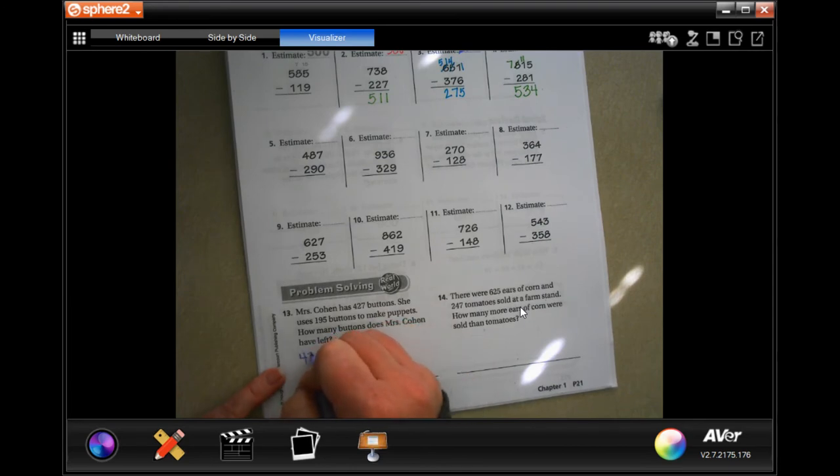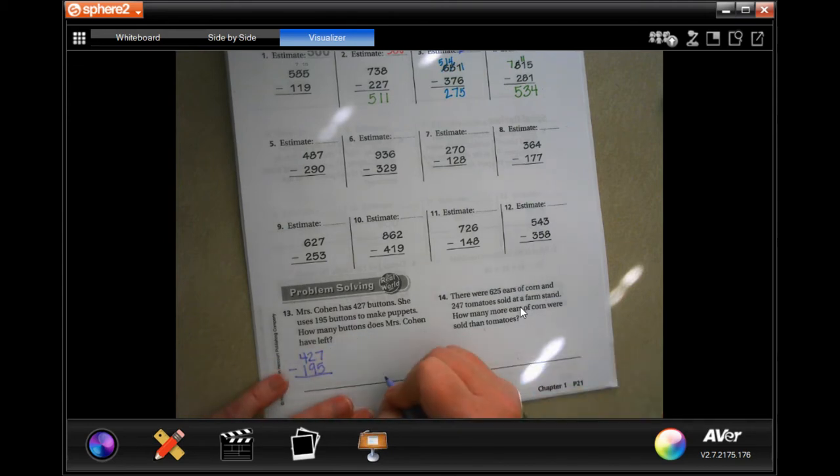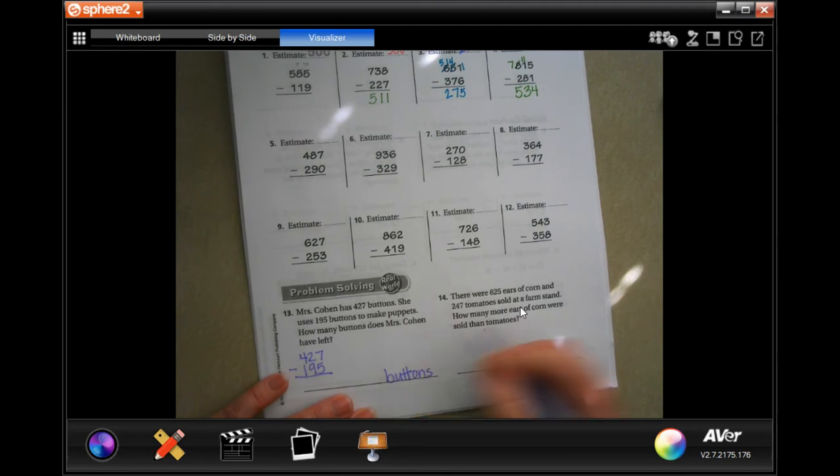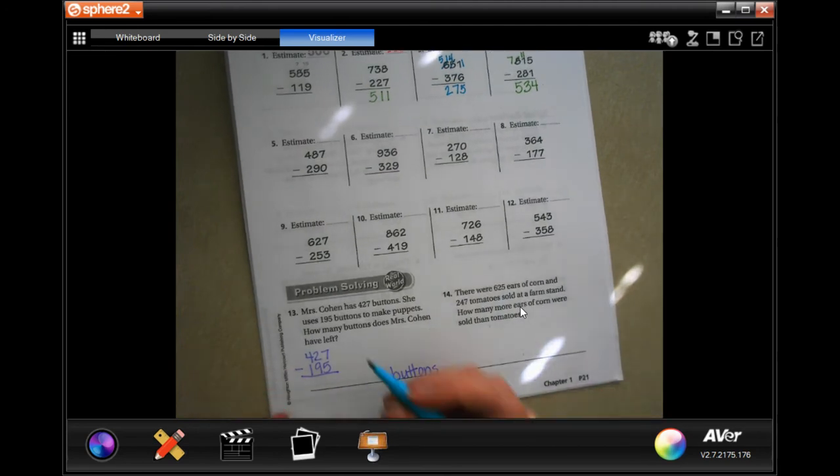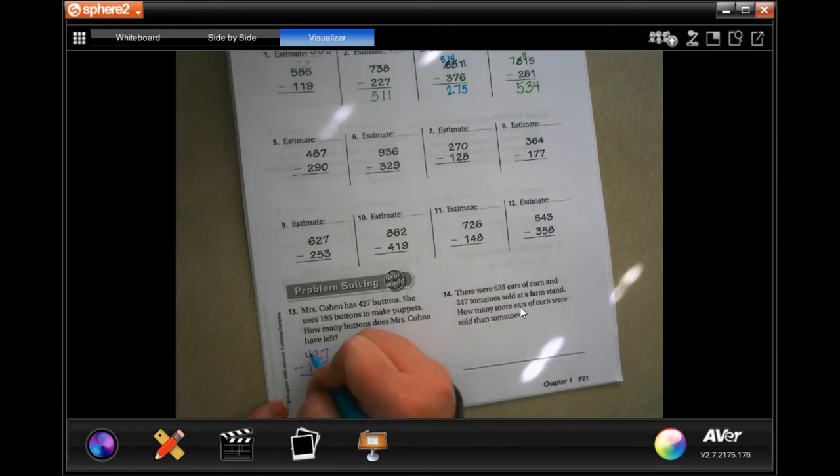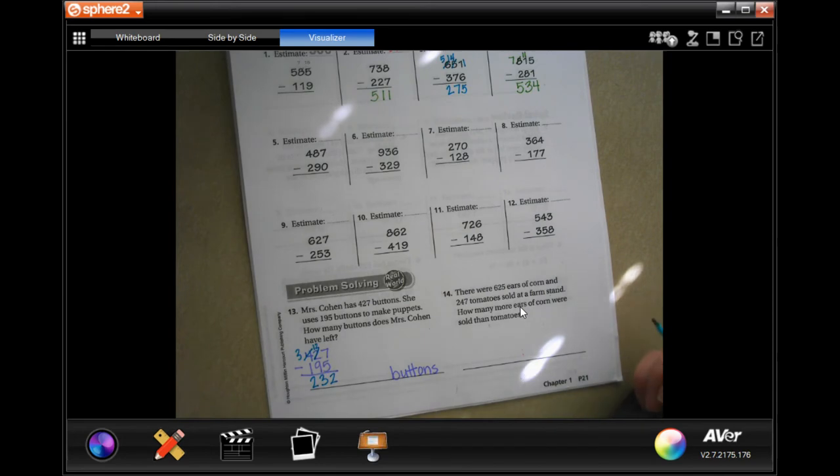So, 427 minus 195. And whatever it is, it's going to be in buttons. We want to make sure we use our label. 7 minus 5 is 2. 2 cannot take away 9. We are going to borrow 1. Now we have 12 minus 9. 12 minus 9 is 3. 3 minus 1 is 2. 232 buttons.